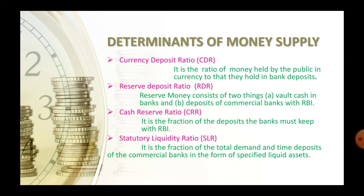The second determinant is RDR, also called the cash reserve ratio. It is the percentage of deposits that commercial banks are required to keep as cash according to the direction of the central bank. The cash reserve ratio is a specified minimum fraction of total customer deposits that commercial banks must hold as reserves, either in cash or as deposits with the central bank.